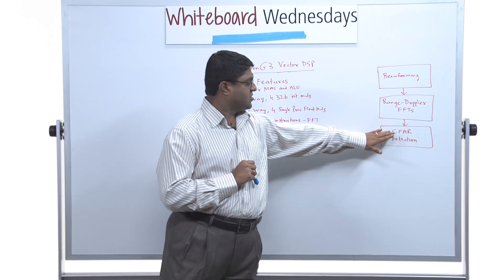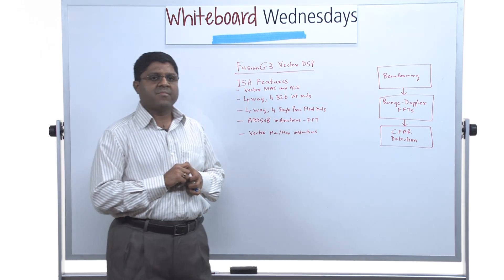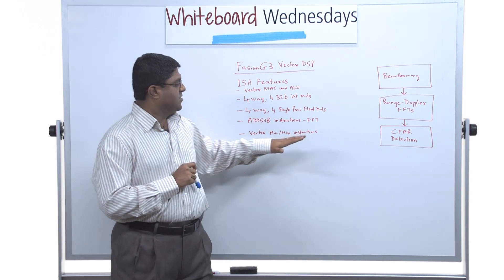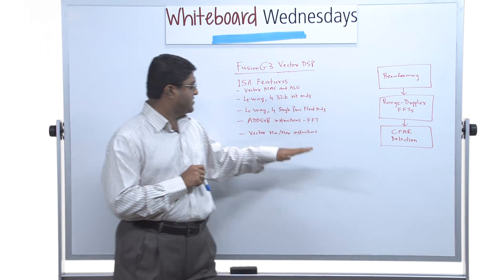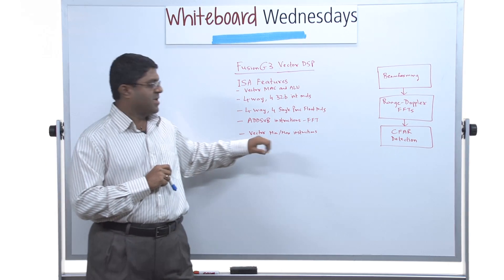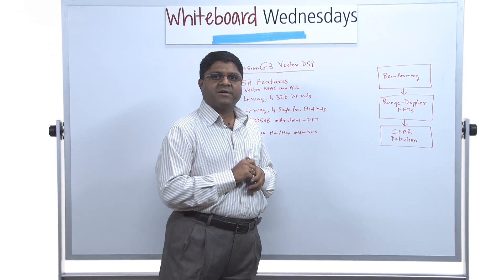CFARs, the constant false alarm rate modules, there are a few variants of them. One of them is called an order statistic CFAR, which needs to do a min-max search on elements. That is where the vector min-max instructions can be efficiently used to optimize the CFAR detection module.